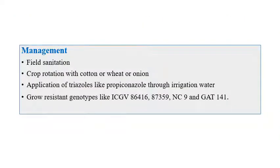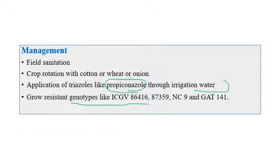For management of stem and pod rot, field sanitation and crop rotation with cotton, wheat, or onion is recommended. Application of a triazole group fungicide like Propiconazole through irrigation water is recommended. Resistant genotypes include ICGV-86416, 87359, NC9, and GAT141.